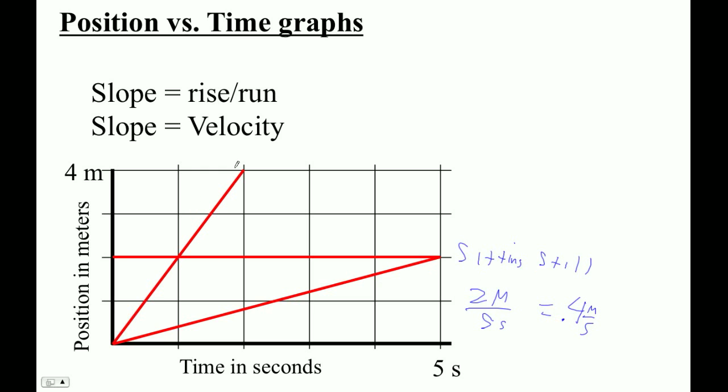This one's a little faster. On this one here, our slope is, the rise is four meters and the run is just two seconds. So that's two meters per second.